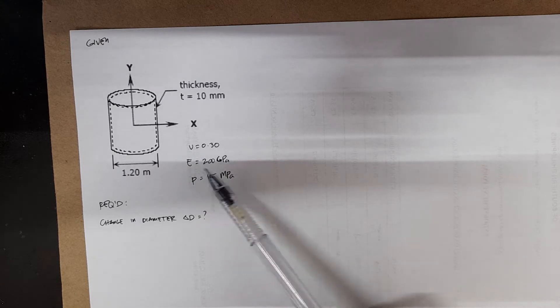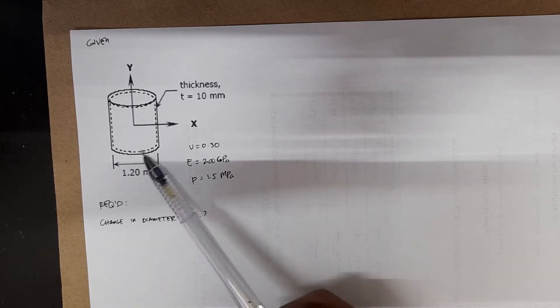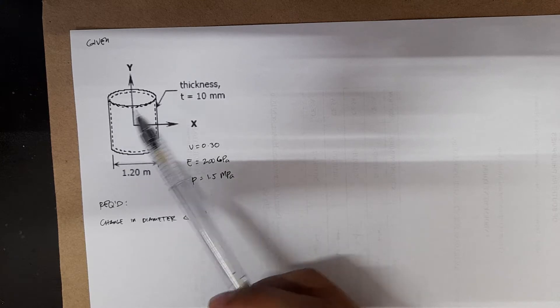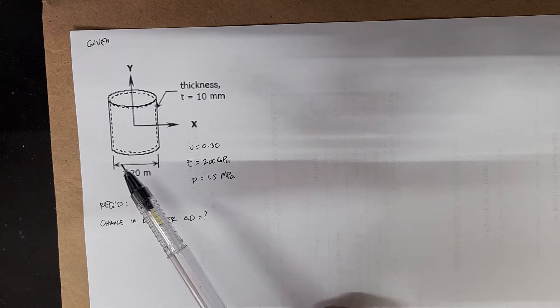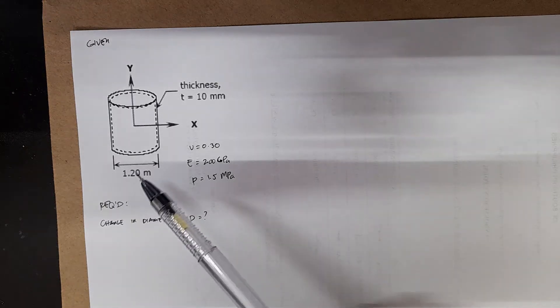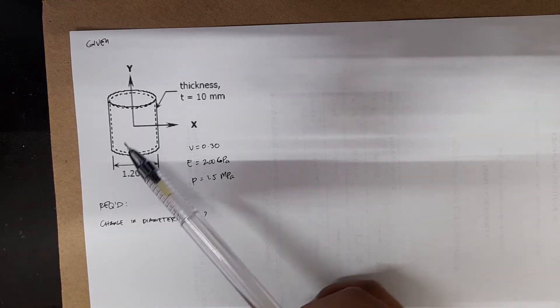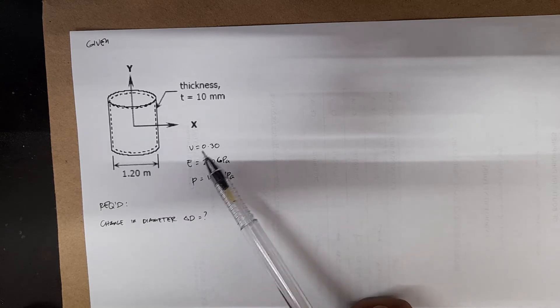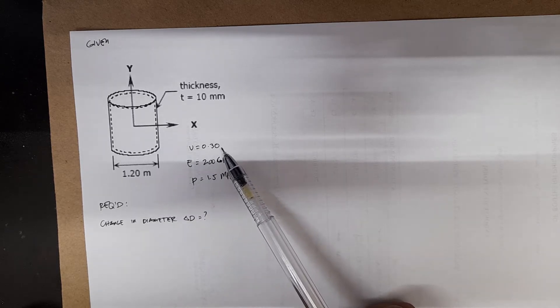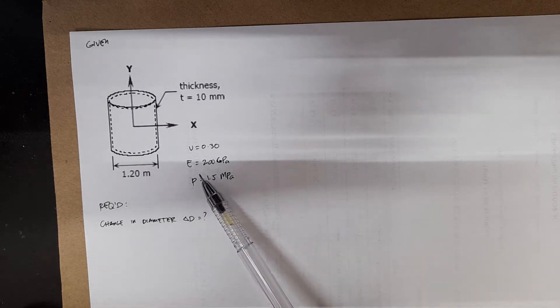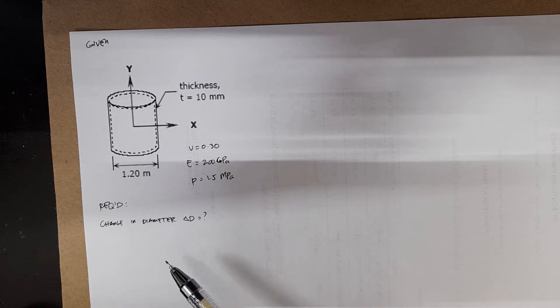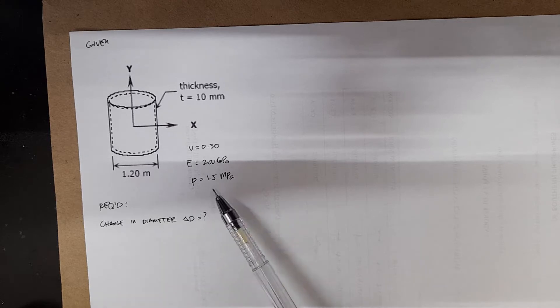These are the data given. We have the dimension of this pipe. This is actually a welded steel cylindrical drum with a Poisson's ratio of 0.3. Then you have the modulus of elasticity which is equal to 200 gigapascals or that's times 10 to the 3 megapascals. And then you have the internal pressure of 1.5 megapascals.